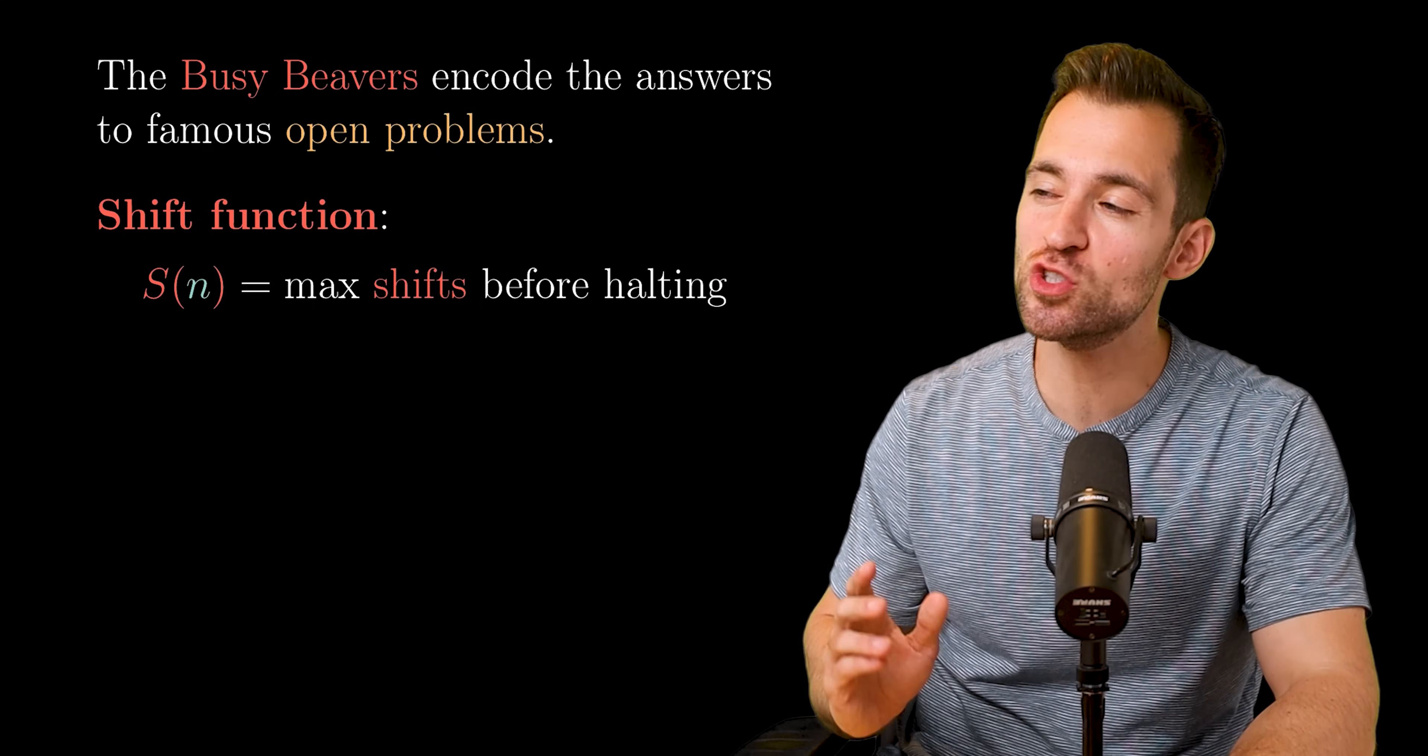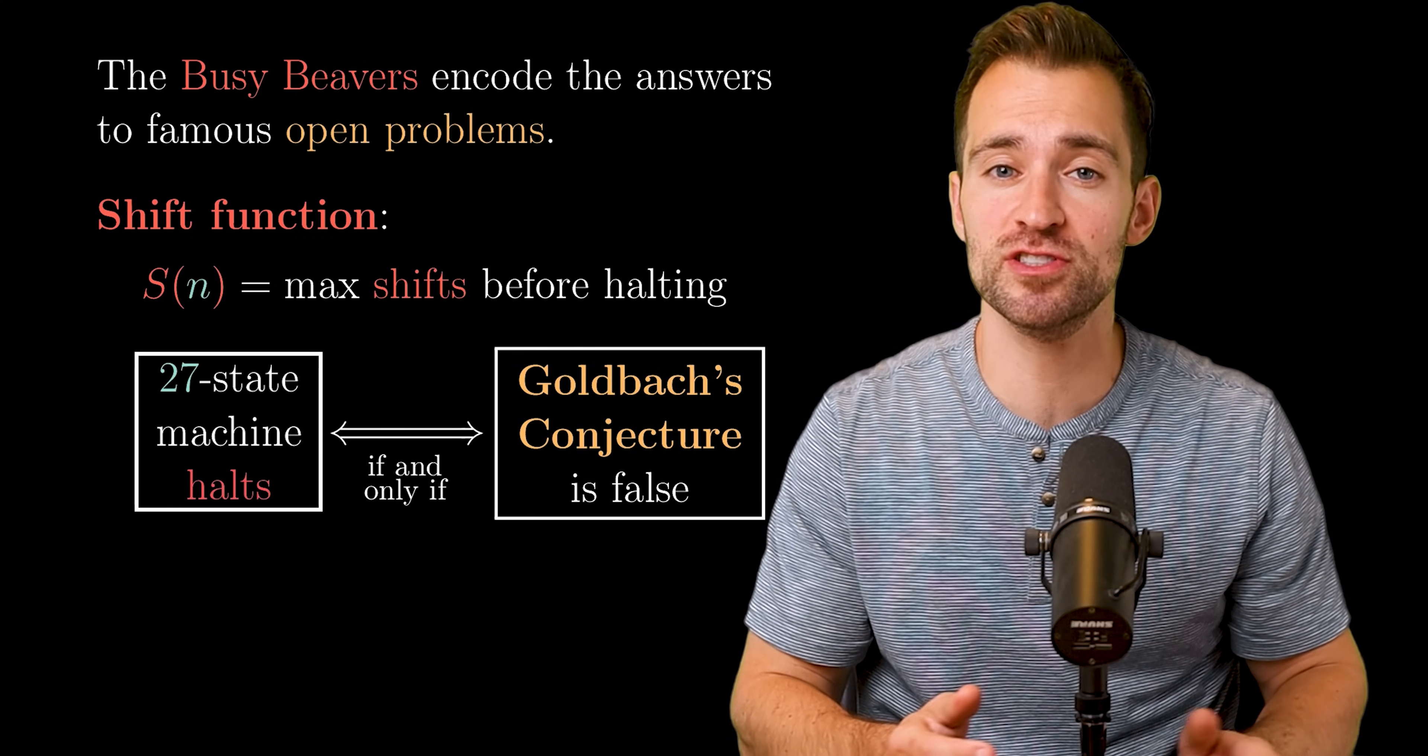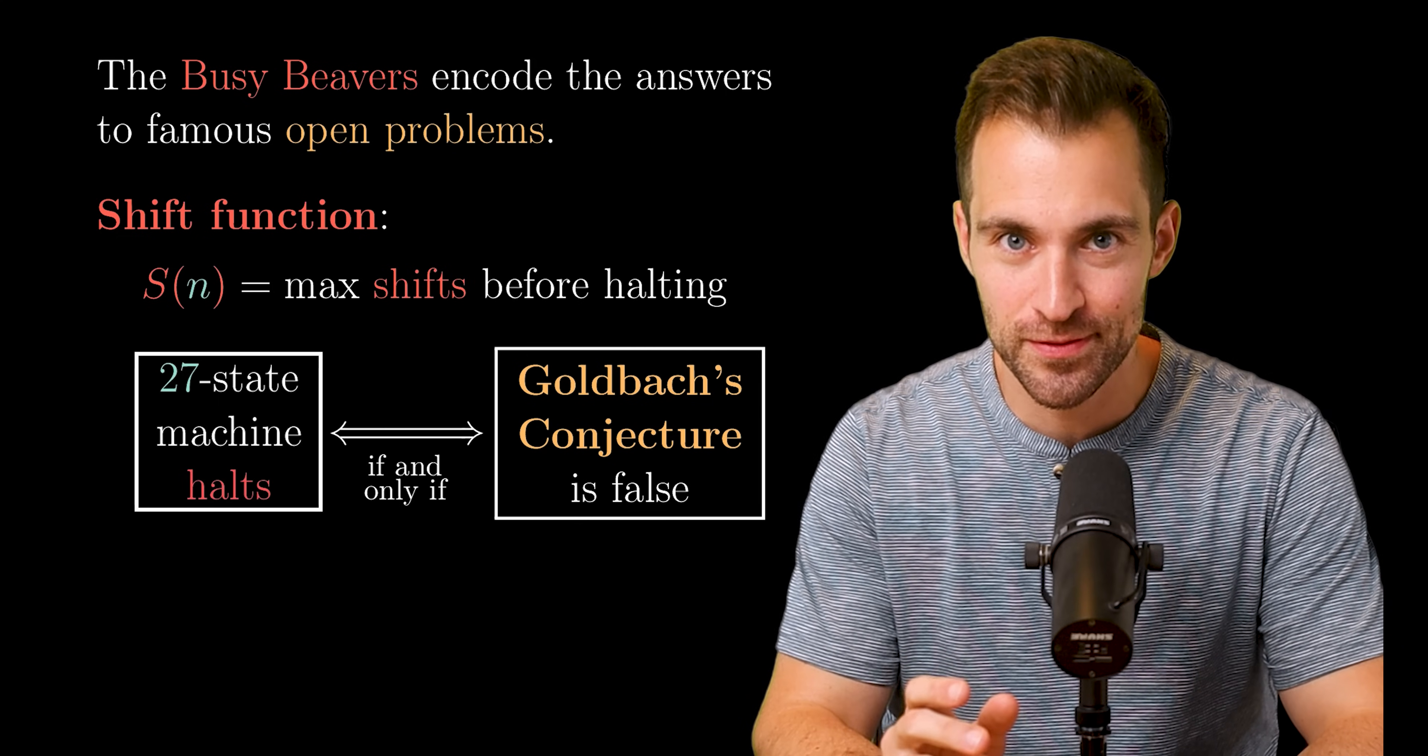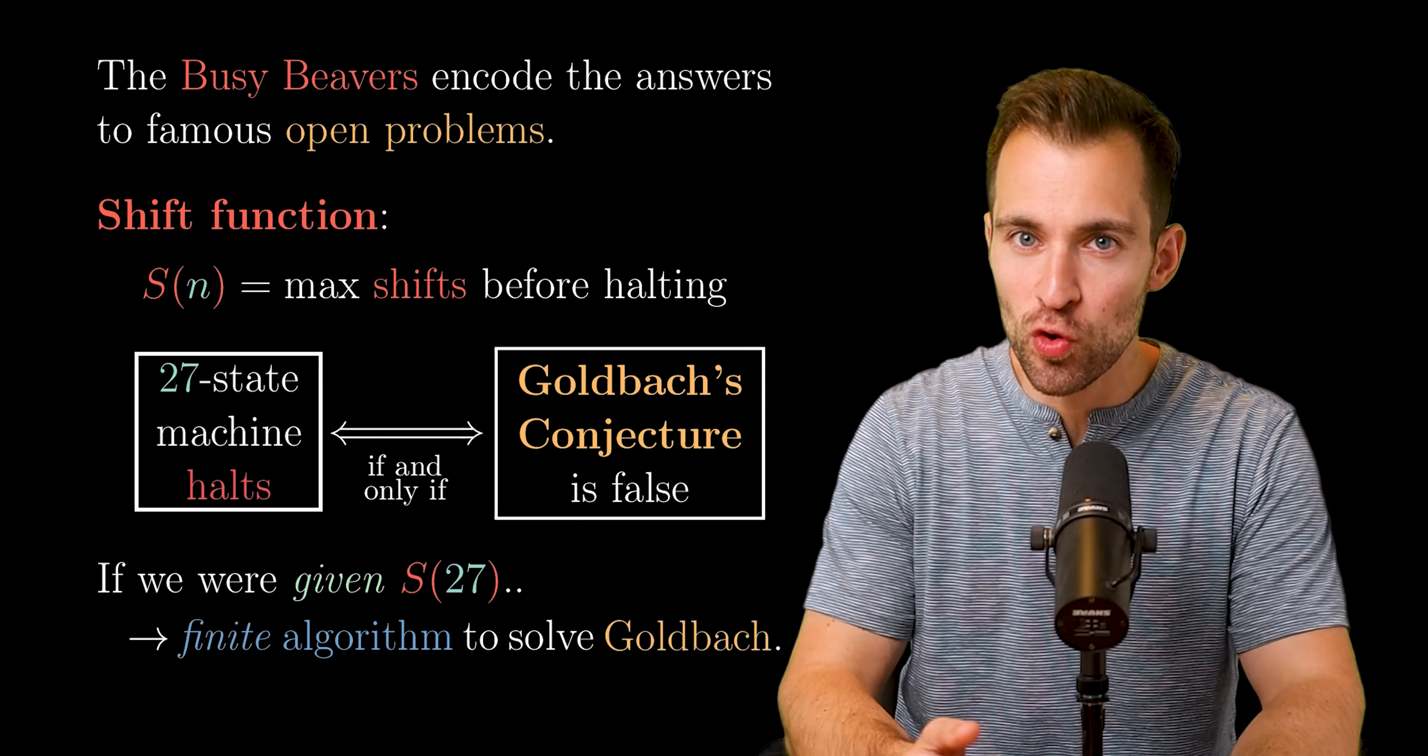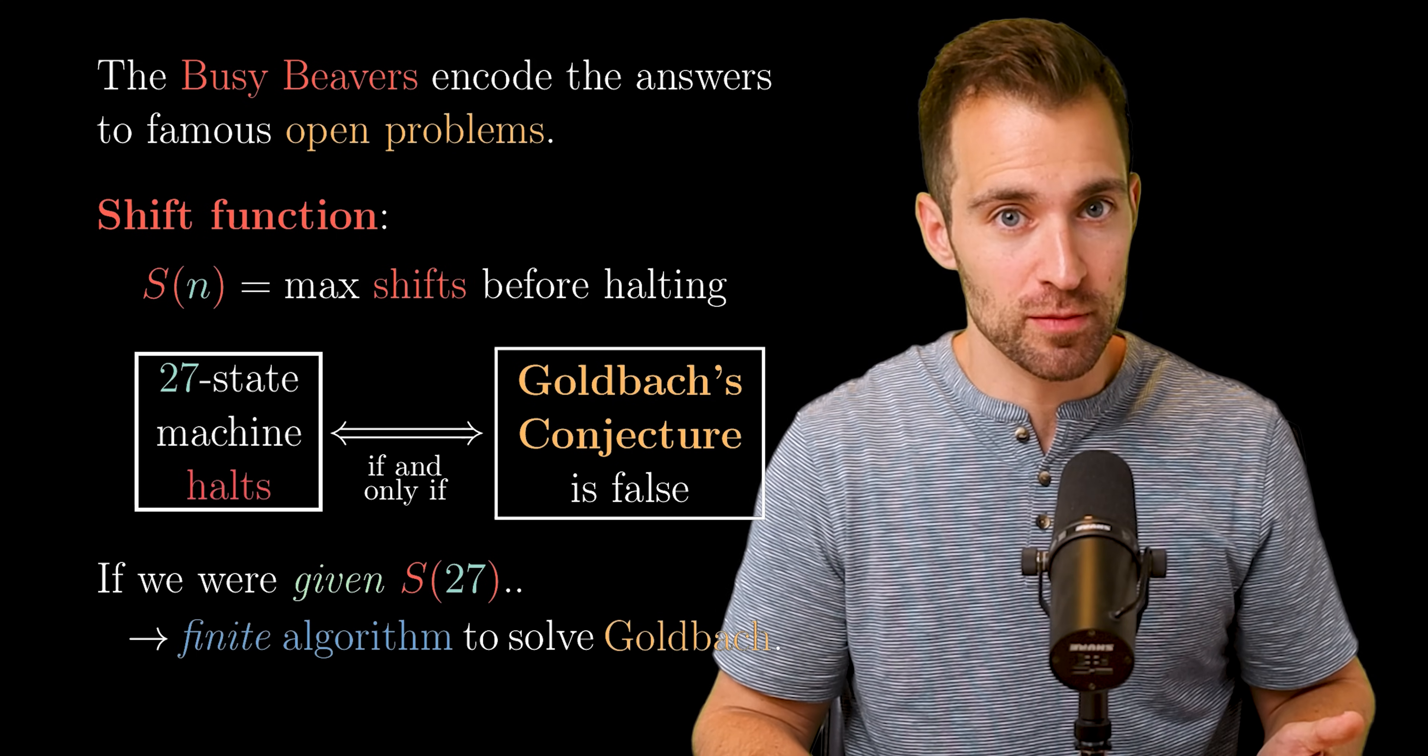Now last time, we mentioned there's a 27 state Turing machine that halts if and only if Goldbach's conjecture is false. It does this by looking for counterexamples to the conjecture. If it finds one, the conjecture is false and it halts. Otherwise, it checks endlessly and never halts. Now here's the kicker. If we're given S(27), then we would have a finite algorithm to solve Goldbach. All we do is run the Goldbach machine up until S(27). If it hasn't halted by then, and since we know S(27) is the max runtime of any 27 state machine, then we know the machine never halts, and so Goldbach must be true.